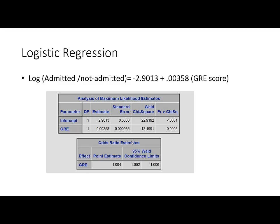You can also see the odds ratio estimates for the independent variable in the SAS output — it's 1.004. We are curious to know how the odds ratio is interpreted and how it's related to the maximum likelihood estimates. The odds ratio is nothing but the exponential of the maximum likelihood estimate. We will now see why that is so.